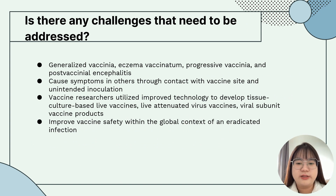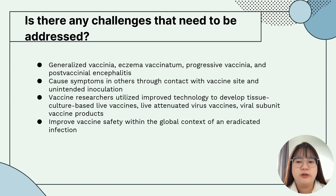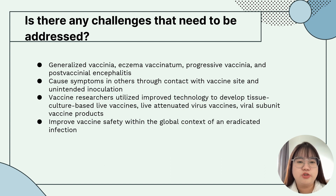Now I'm going to talk about the challenges that need to be addressed. Live vaccinia virus vaccine can sometimes lead to adverse events, which can be serious and include conditions like generalized vaccinia, eczema vaccinatum, progressive vaccinia, and post-vaccinia encephalitis. In addition, the vaccine can sometimes cause symptoms in others through unintended inoculation, and there is also a risk of transmission from a vaccinated mother to her fetus. In the post-eradication era, vaccine researchers have utilized improved technology to develop tissue-culture-based live vaccines, live-attenuated virus vaccines, and viral subunit vaccine products, to improve vaccine safety.